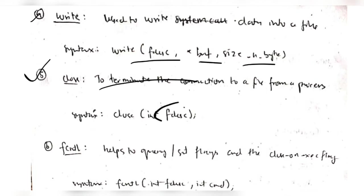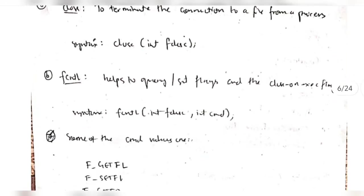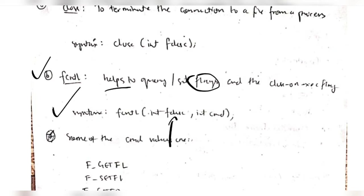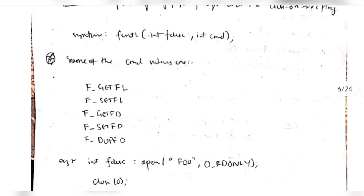The 'close' function takes the file descriptor of which file we want to close. 'fcntl' helps to set the flags in queries - like we have to open the flag, close the flag, return, or do any other function. The syntax has the file descriptor and the cmd command, meaning what command you want to perform.